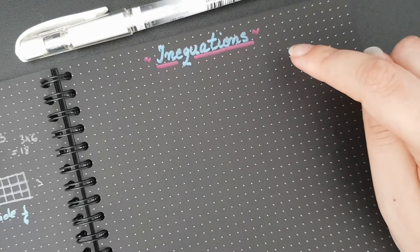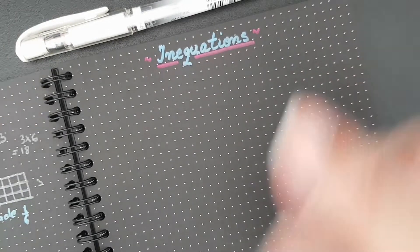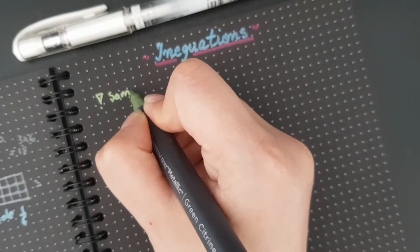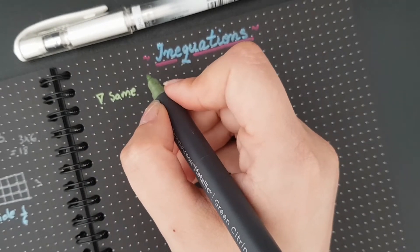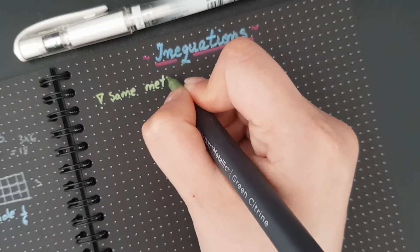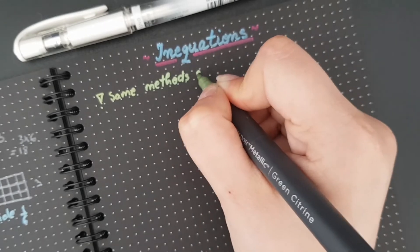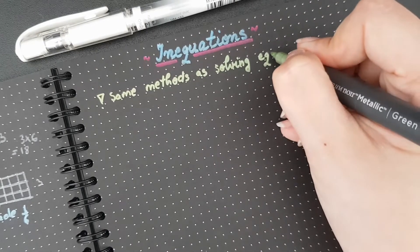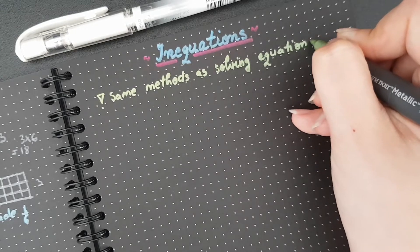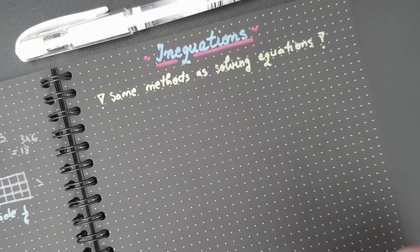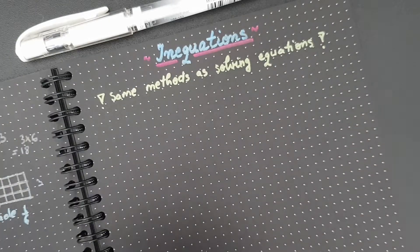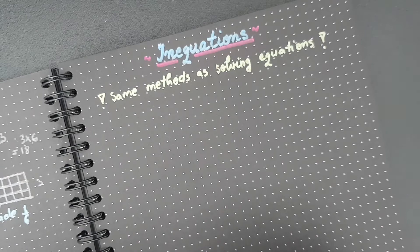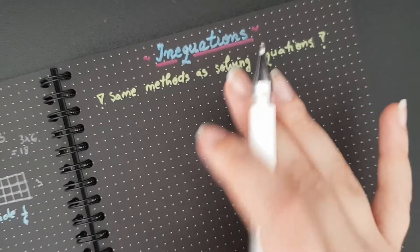So first thing, and I want to make a big fuss about it, it follows on the same steps and the same idea as equations. So I'm gonna put it here, same methods as solving equations. And I think it's really important for everyone to properly understand that they're basically very, very similar. They're just some small differences. I think just one difference and the rest is the same.